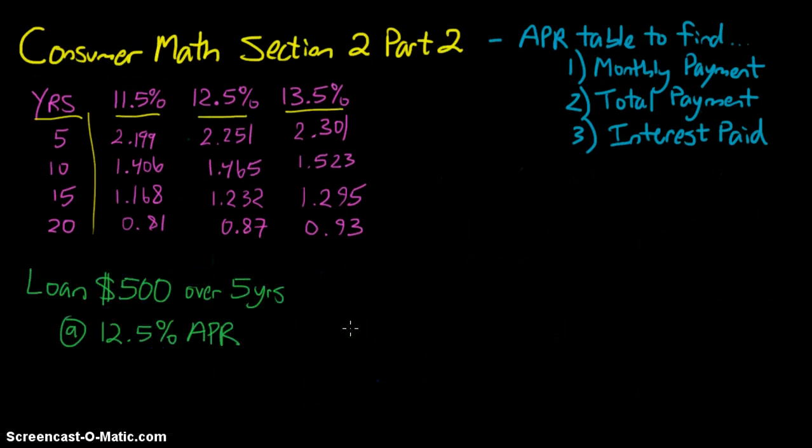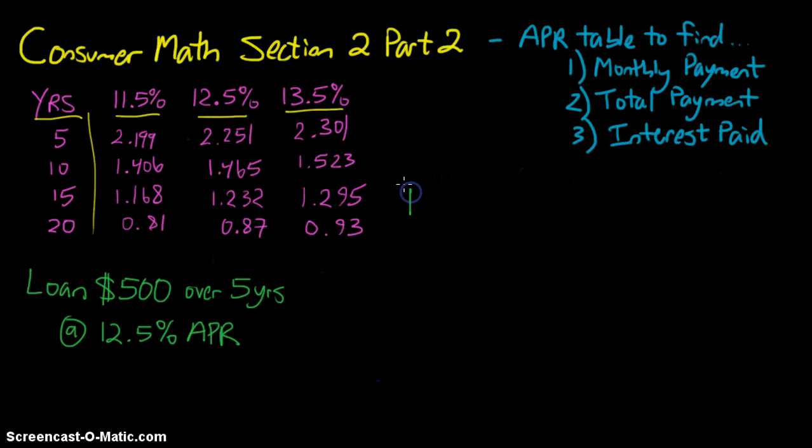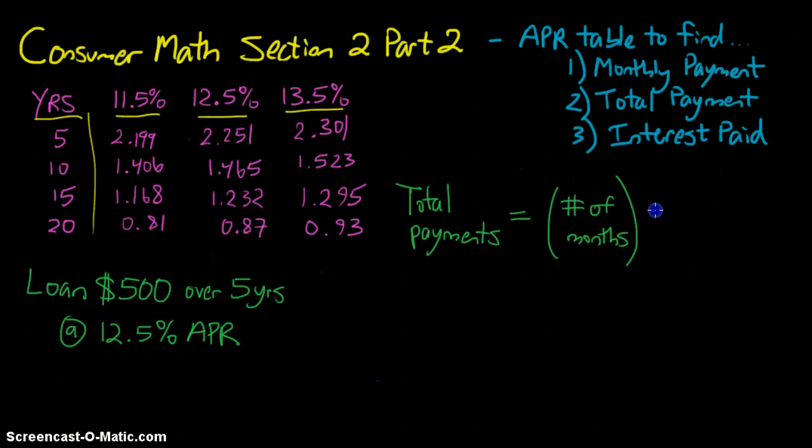So let's now move on to step two of this which is finding the total payment. Once we've found our monthly payments we can use that information to now help us find our total payments. So what's the formula then for finding the total payments? The total payments is equal to the number of months that we're paying it off over, multiplied by how much you're paying each month, the monthly payment.